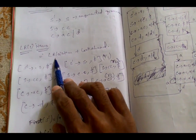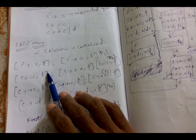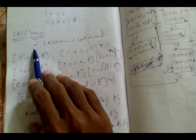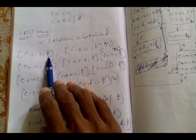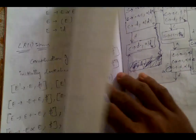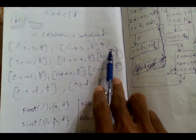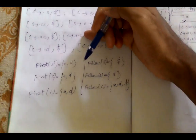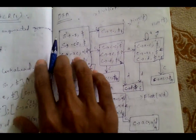An LR(1) item is a combination of an LR(0) item and a lookahead symbol. Initially, all lookahead symbols for all LR(1) items will be the dollar symbol. I've also written shorthand notations R1, R2, R3, and R4 for the productions, as we'll be using these in the parsing table. We also need to calculate FIRST and FOLLOW, as these may be useful in further problem solving.